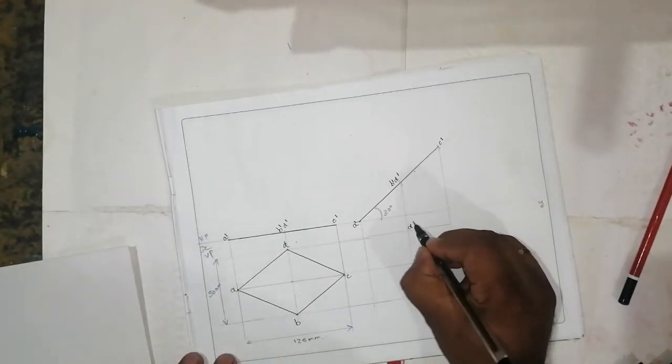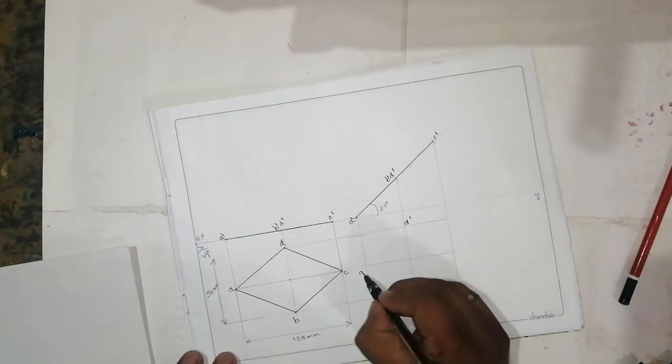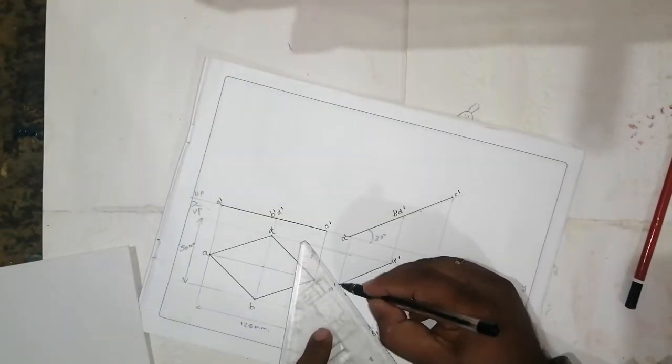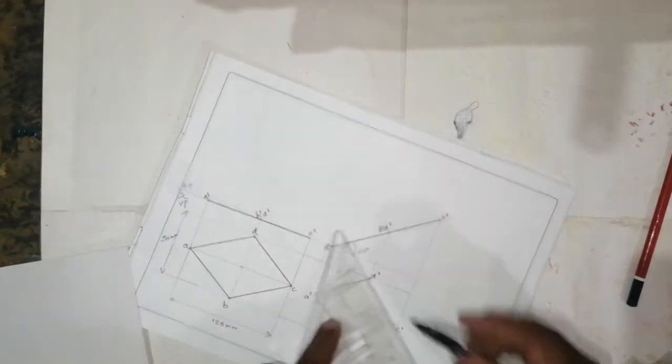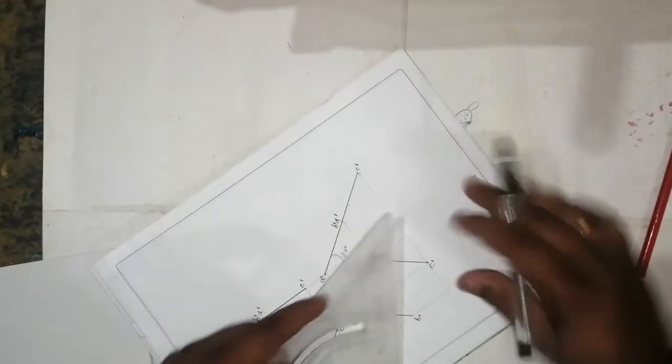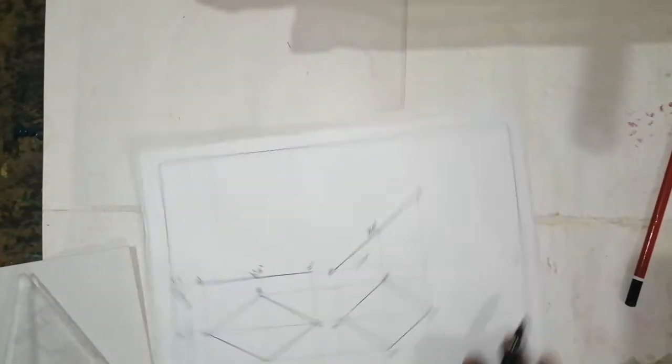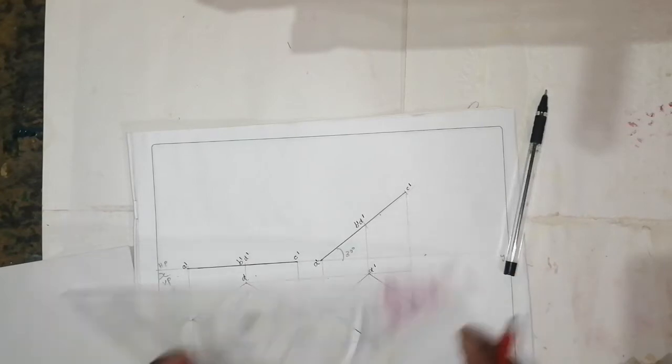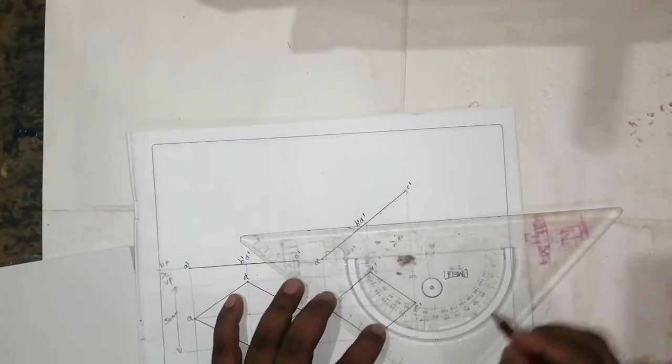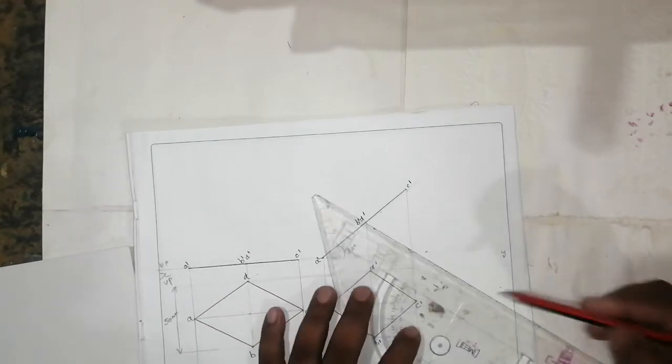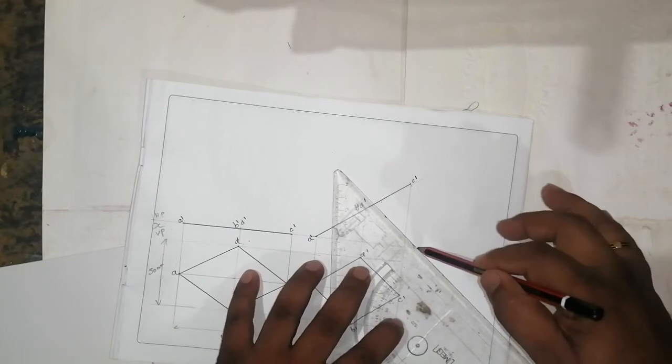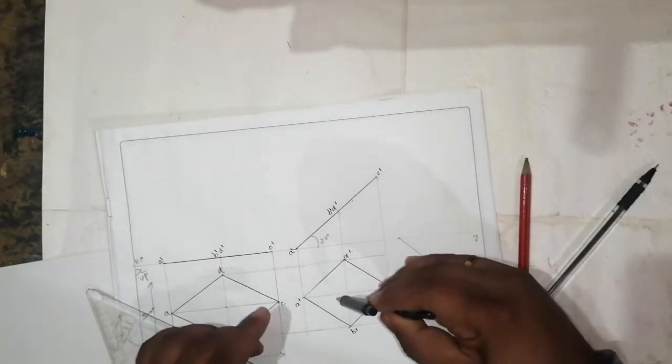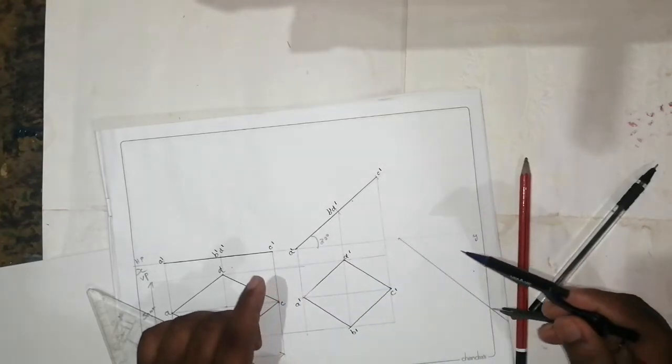So it is going to be D, B dash, A dash, and C dash. The question says they are parallel, so this should come like this. Make one point and take it as 30 degrees.